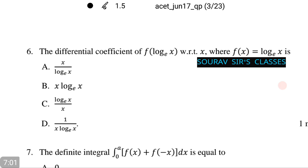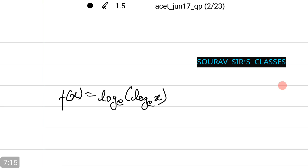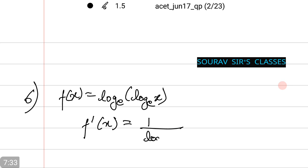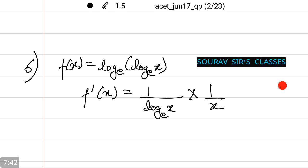The next question asks for the differential coefficient of f(log_e x) with respect to x, where f(x) equals log_e(x). We see that f(log_e x) equals log_e(log_e x). Differentiating, f'(x) equals 1 divided by (log_e x) multiplied by 1 divided by x. This is the answer to question 6.